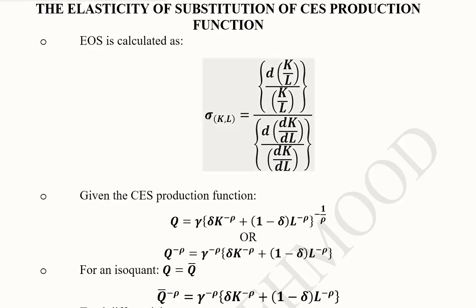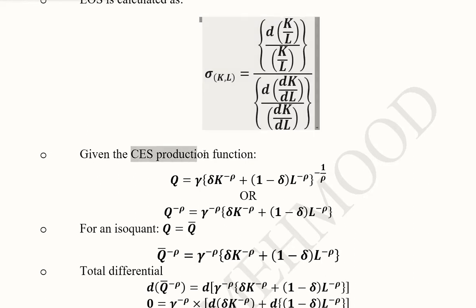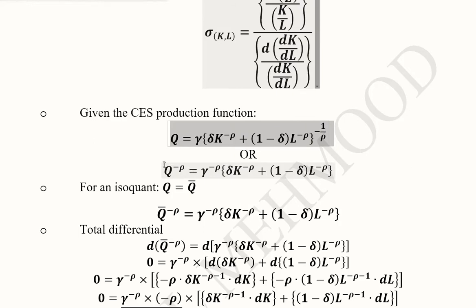We remember from the previous lectures that this is the formula of elasticity of substitution. We learned three of them, but we are using this one. The CES production function is mentioned here. We remember from the last video that we can use either this form or that form. This form is actually more friendly when it comes to simplification, so we are going to continue using this form because there is no such whole part which can lead to binomial theorem or expansion.